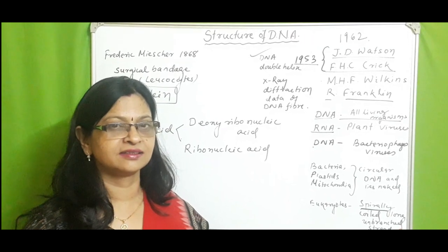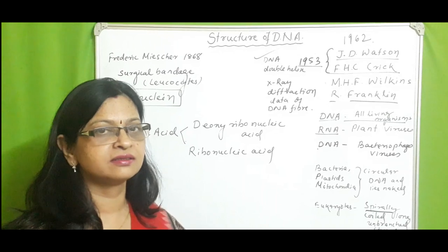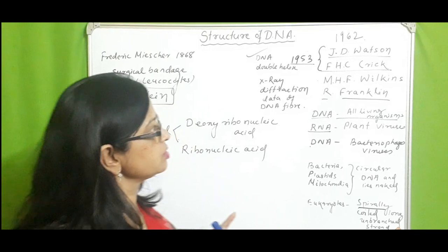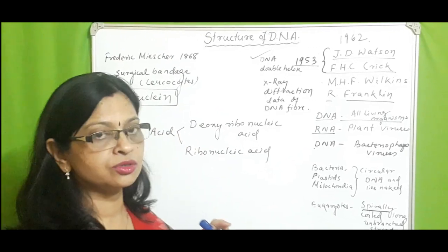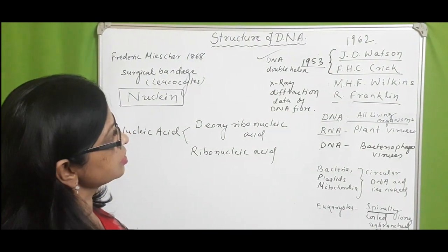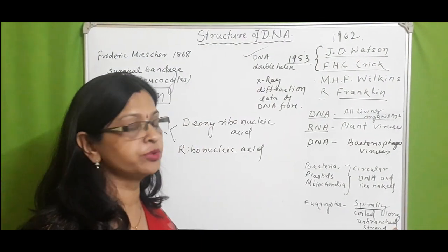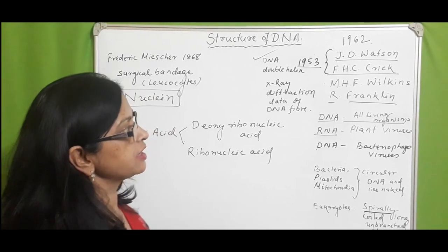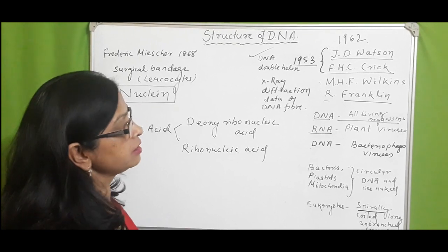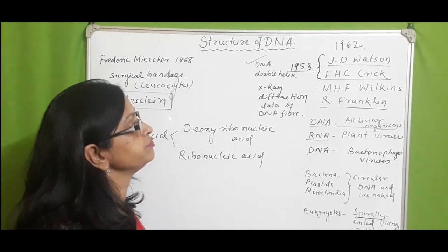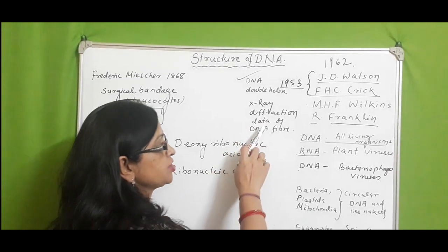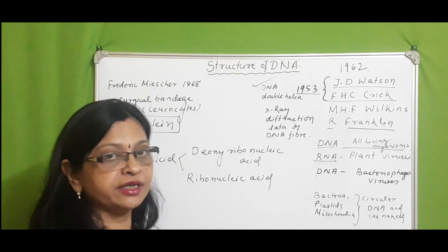Hello friends, today we learn about the structure of DNA. Before going to the structure, you must know the history. The structure of DNA was first proposed by J.D. Watson and F.C. Crick in 1953. They proposed the double-helical structure of DNA, which was based on the X-ray diffraction data of DNA fibers.